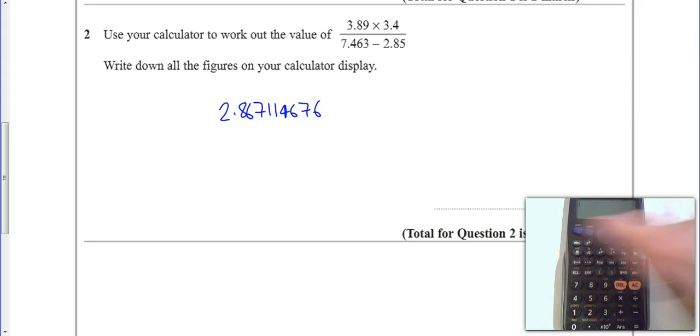One more point: if we just go into setup as well, you should check you should be in degrees mode. That means you should have a little D up there, not a little R. If you have a little R up there, that means you're in radians mode and your trigonometry answers will be wrong. So just make sure you've got a little D.